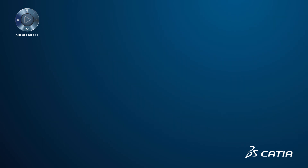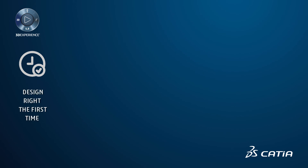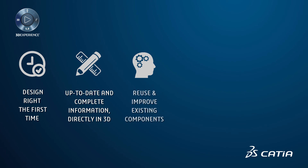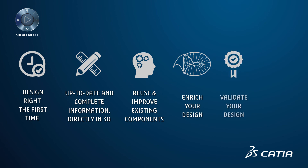With CATIA Engineering Excellence, you will reduce time to market by getting the design right the first time. Always access up-to-date and complete information directly in 3D. Easily reuse and improve existing components. Enrich your design with sophisticated and complex shapes. Validate your design to reduce the need for physical prototypes. Collaborate and manage your data with your team and others.